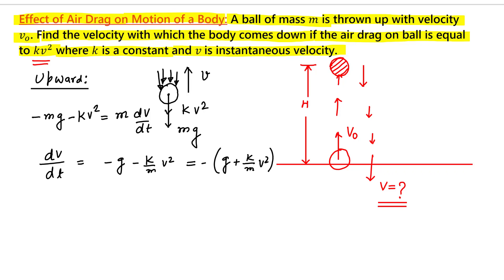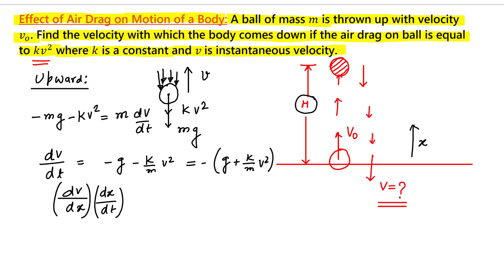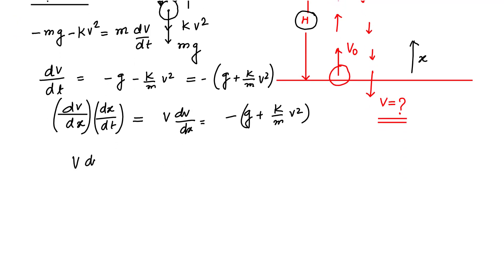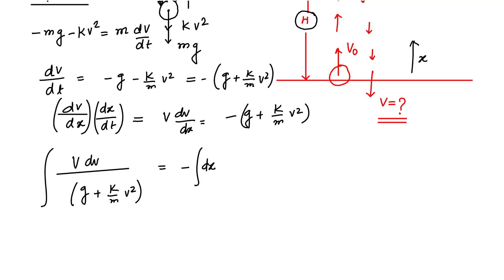Now let us make a change of variable. We want to find the maximum height the ball will attain before starting the downward journey. We multiply and divide by dx, where x coordinate is in the upward direction. Since dx/dt equals v, we can write: v dv/dx equals minus(g + (k/m)v²). We can integrate this expression, rewriting as: v dv divided by (g + (k/m)v²) equals minus dx.